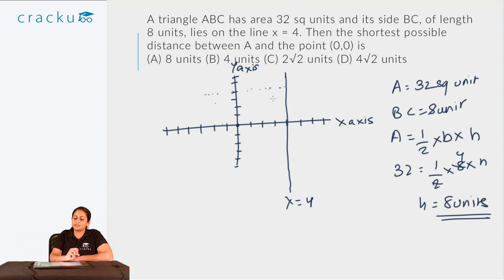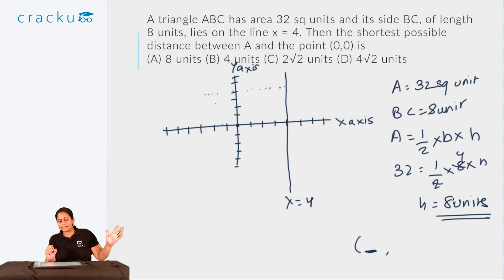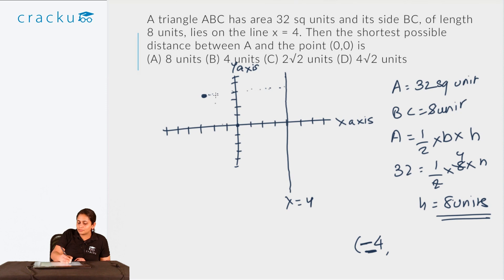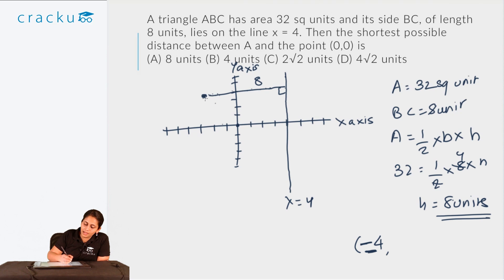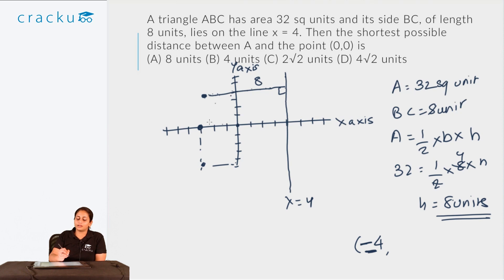This means the x-coordinate of A must be 8 units to the left of the line x = 4. So the x-coordinate of A should be −4, because counting 8 units to the left of x = 4 gives x = −4. Now, to find the shortest possible distance between A and (0, 0): if A is anywhere other than on the x-axis, the distance includes both horizontal and vertical components. The shortest distance is when there is no vertical displacement — that is, when A is on the x-axis.